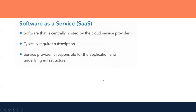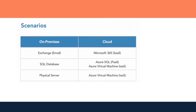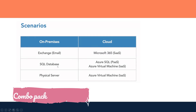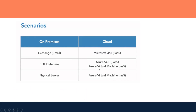On the cloud we have Exchange Online and Office 365. For databases, Azure SQL is available on Azure. Azure machines as Infrastructure as a Service, and the physical server equivalent is Azure Virtual Machine. Office 365 is an example of SaaS, Azure SQL is an example of PaaS, and Azure Virtual Machine is an example of Infrastructure as a Service.